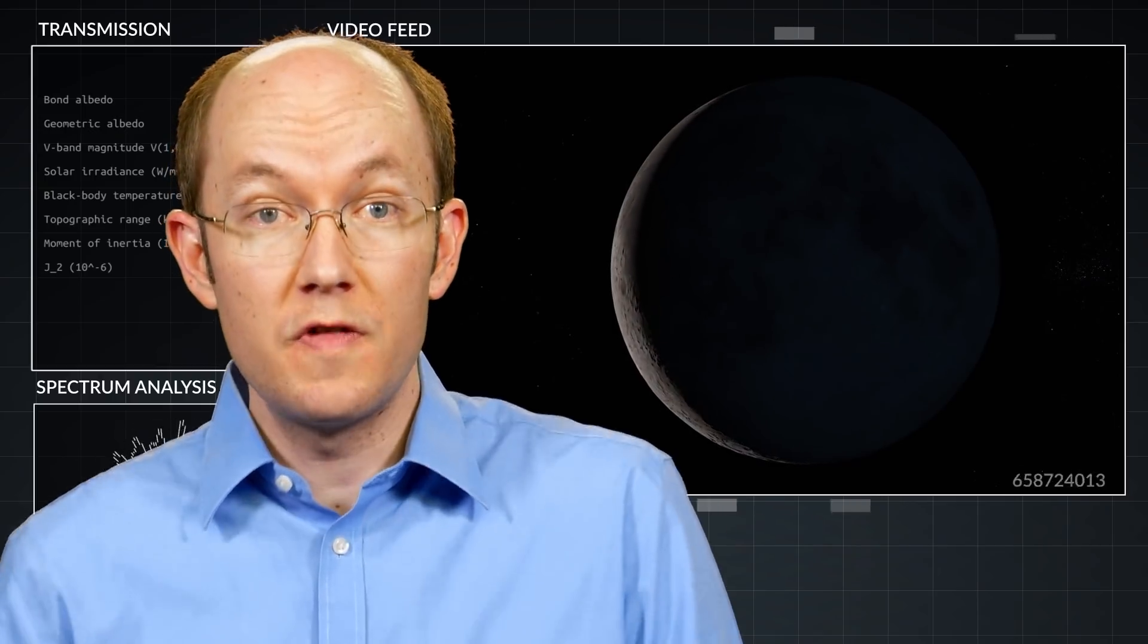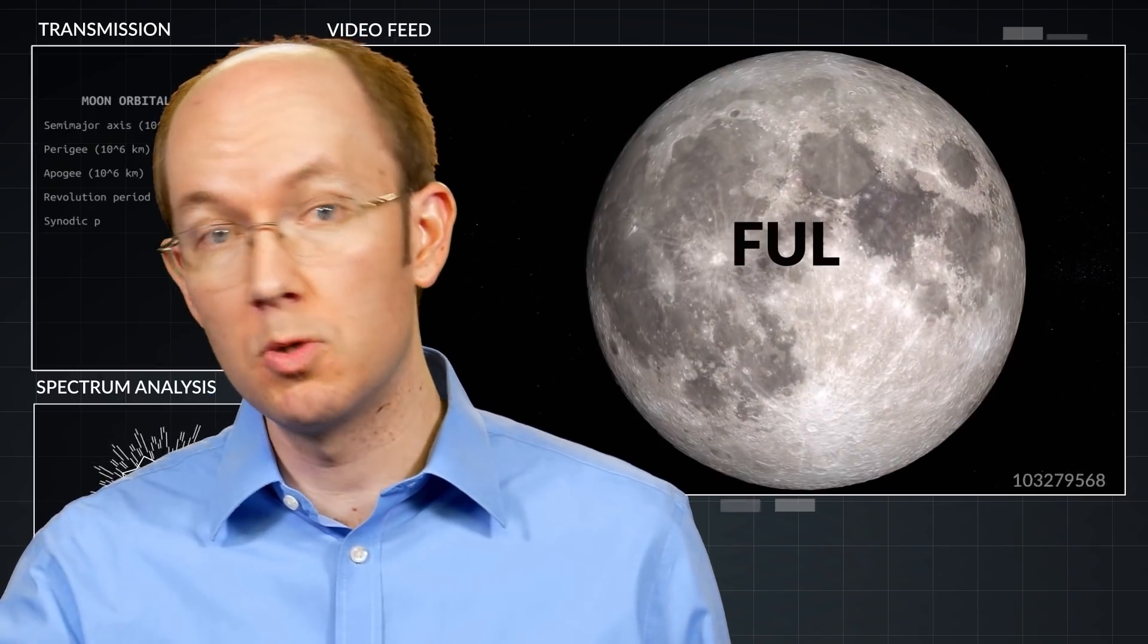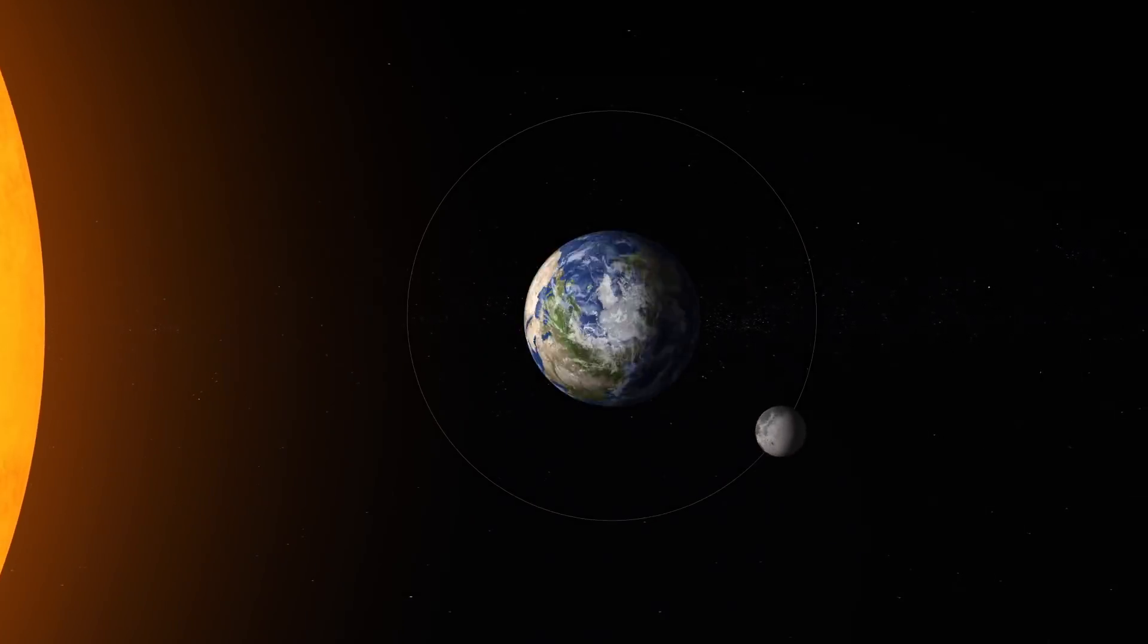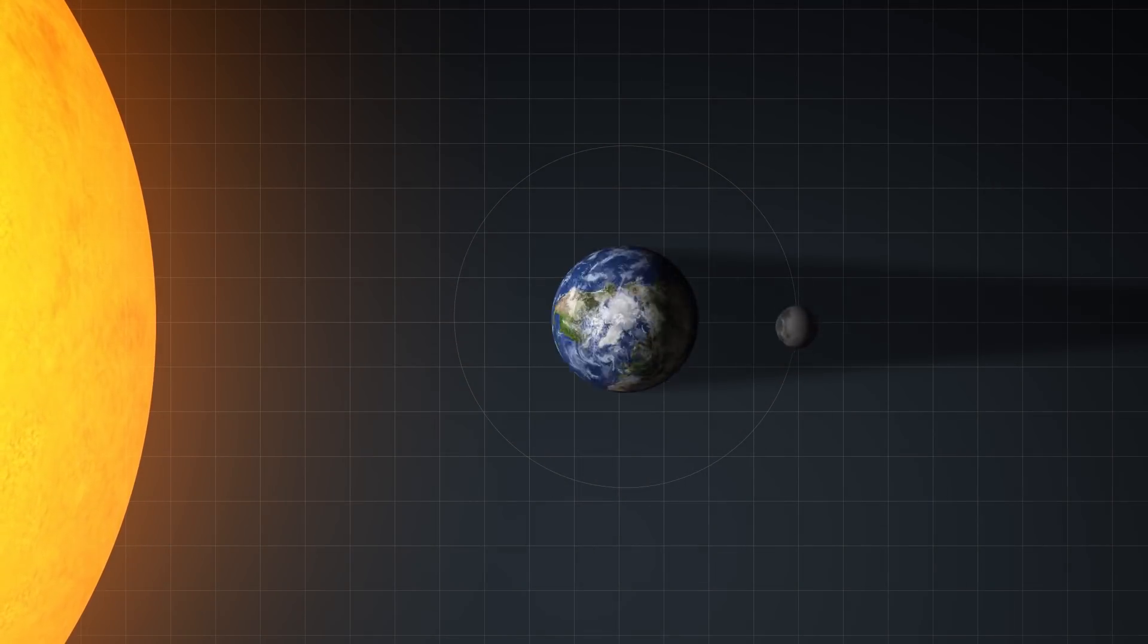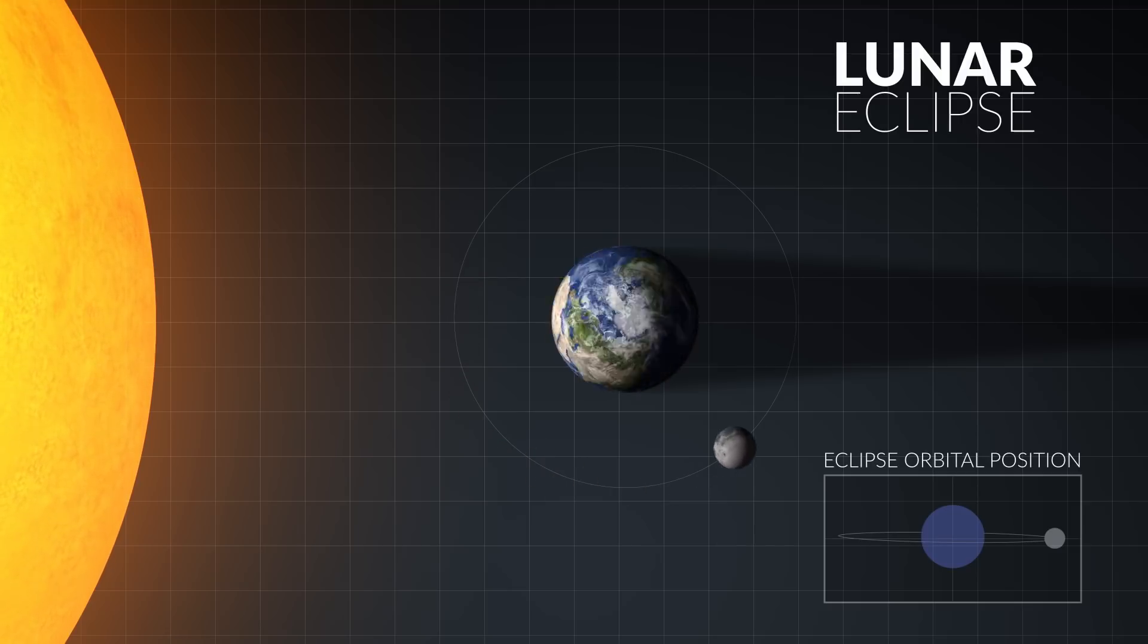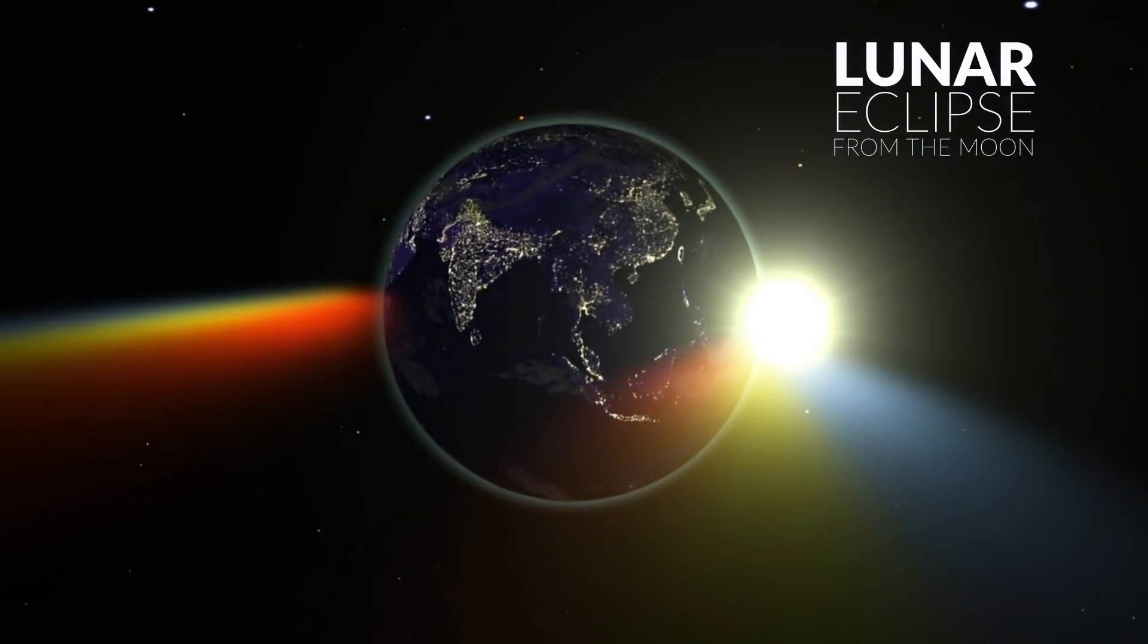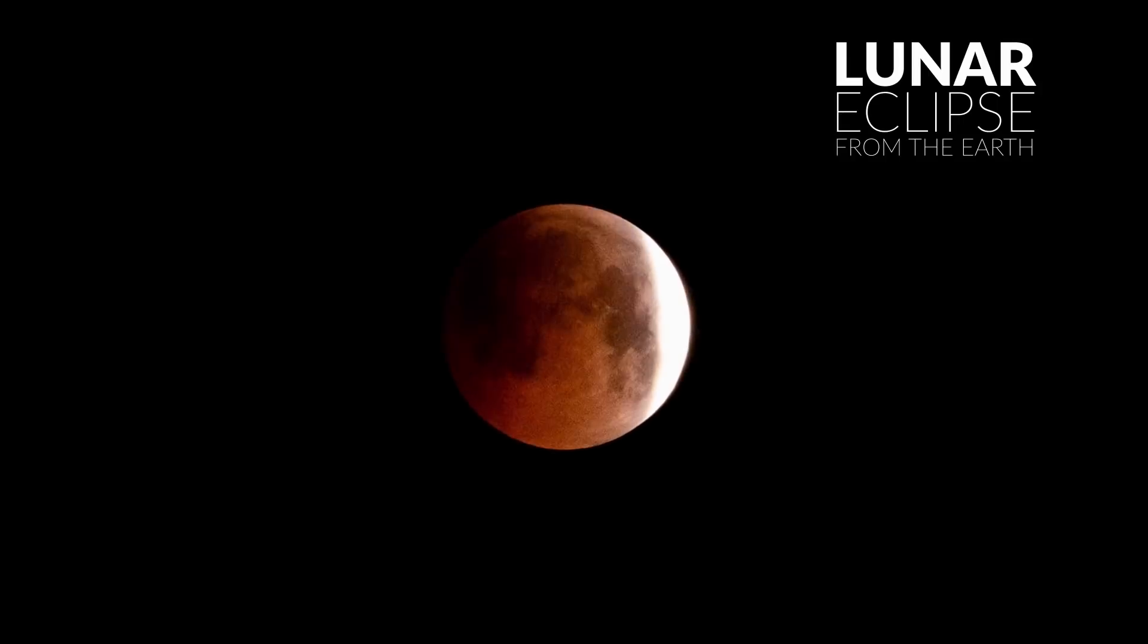When the moon passes through these points in its minimum new moon or its maximum full moon phase, earth is treated to a stunning eclipse event. Lunar eclipses occur only during the full moon phase, where the moon's orbit crosses precisely behind the earth passing through its shadow. For several hours as the earth's shadow covers the moon, the nighttime side of earth is treated to the bright full moon turning a dark reddish orange.